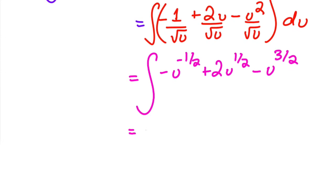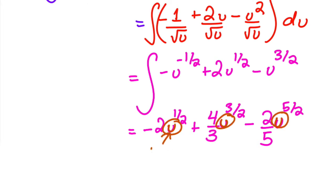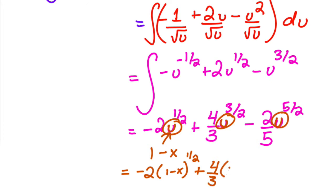Integrating term by term gives: −2u^(1/2) + (4/3)u^(3/2) − (2/5)u^(5/2). Substituting back u = 1 − x, the final answer is −2(1−x)^(1/2) + (4/3)(1−x)^(3/2) − (2/5)(1−x)^(5/2).